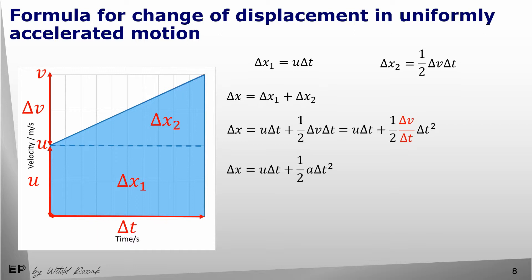Initial velocity and acceleration in our formula are vector quantities, so you will have to use the correct signs to correctly represent directions. If an object is moving without changing direction, the magnitude of the total change of displacement is equal to the distance travelled, so we can use this simplified scalar formula to calculate distance in uniformly accelerated motion in one direction.